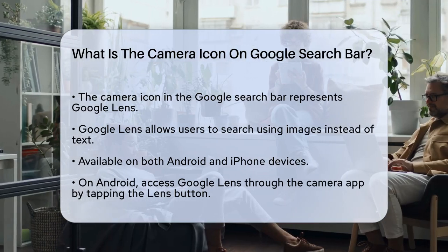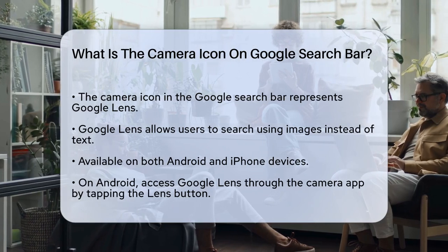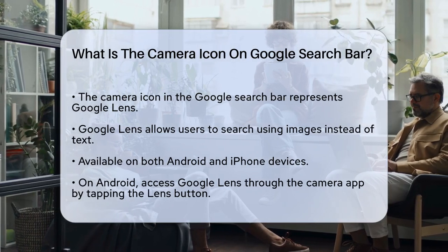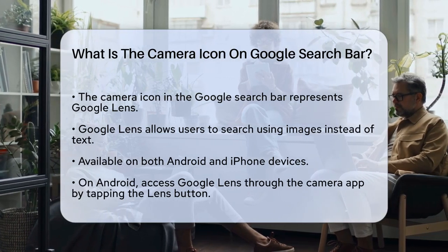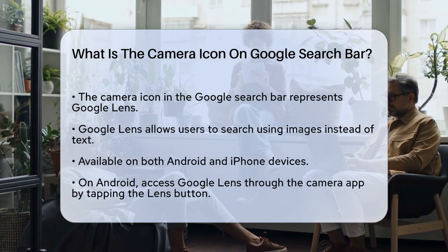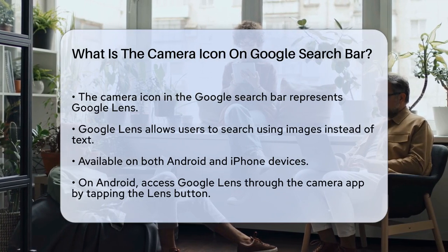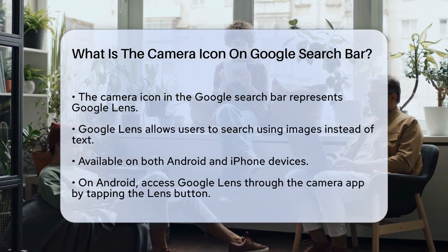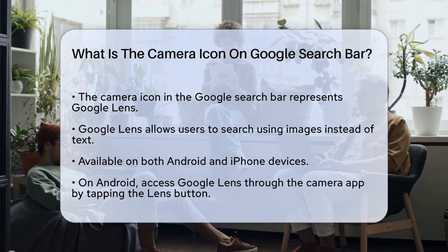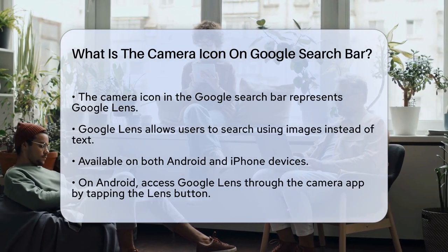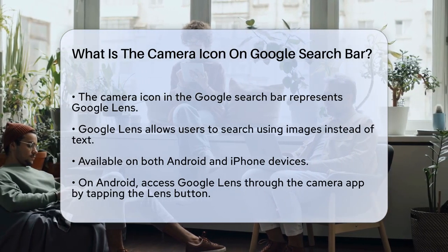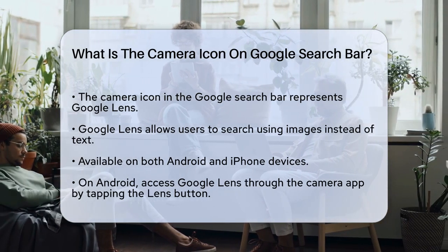Google Lens is a smartphone feature that lets you search for things using images. Whether you're using an Android or an iPhone, this feature is available to help you identify objects, translate text, and even get homework help.